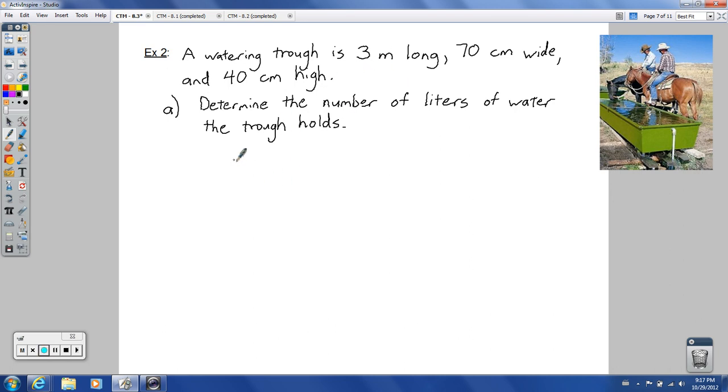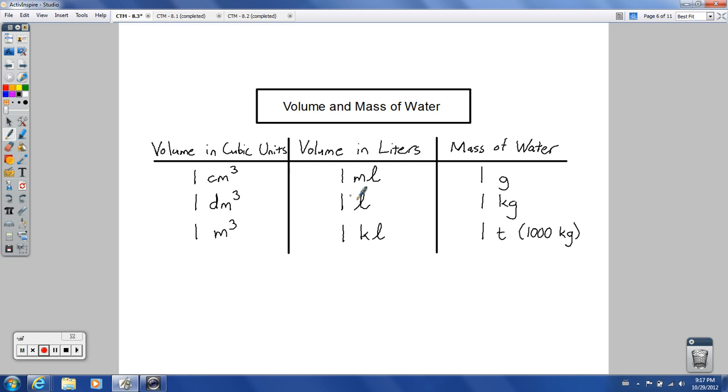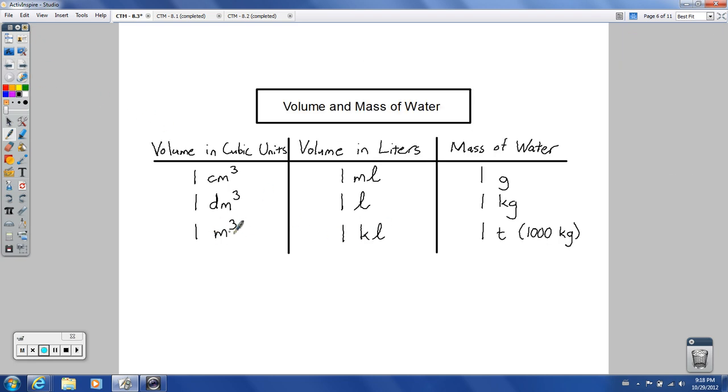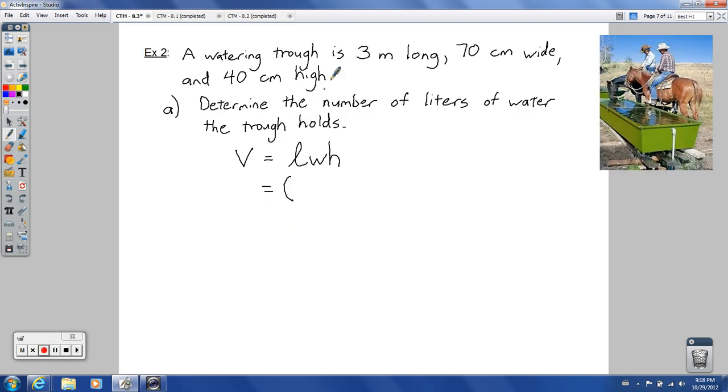We're estimating this as a rectangular prism, a box that holds water. Determine the number of liters of water the trough holds. So how can we do this? Well, we go back to our volume formulas, and the volume of a rectangular prism, volume of a box, was just length times width times height. So we have length is three meters, but these are in centimeters and centimeters. I want to compare the same things.